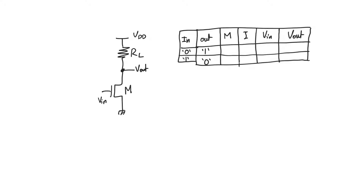Ideally, we want the output high to correspond to VDD and V_output_low to correspond to zero volts. To find the output high, we use V_input equals zero volts. We will shortly find out that this is actually not strictly correct — we should not use V_input equals zero volt — but we will find out why it is wrong yet still doesn't give us wrong results.